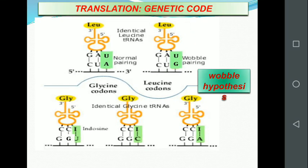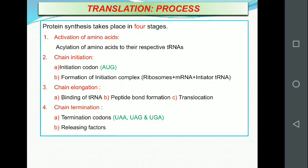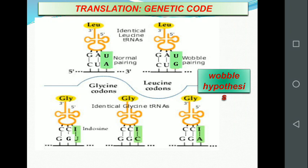This concept of wobble hypothesis has four different postulates, and you have to remember the table showing which anticodon base can recognize which bases in mRNA. I hope you understand the concept. Thank you all.